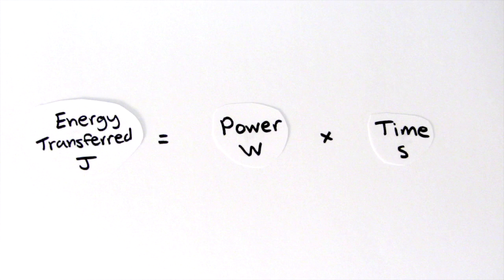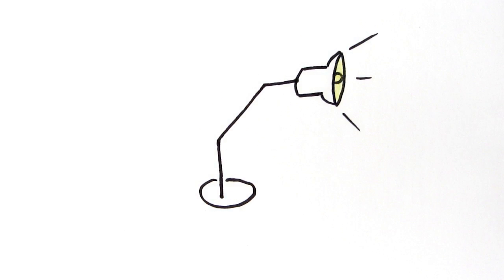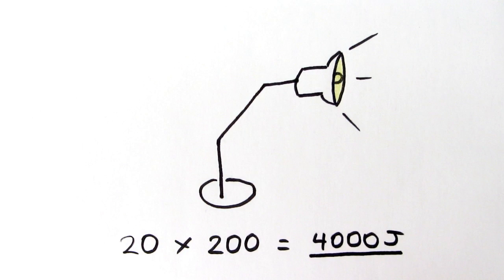You can also use the equation E equals P times T, where E is the energy transferred in joules, P is the power in watts, and T is the time in seconds. For example, a 20 watt lamp lit for 200 seconds transfers 4000 joules of electrical energy.